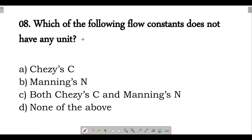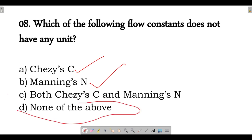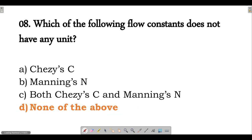Next question: which of the following flow constants does not have any units? Both Chezy's constant and Manning's coefficient have units in CGS systems. So none of the above is the correct option — option D is correct.